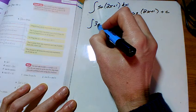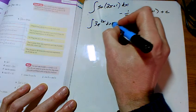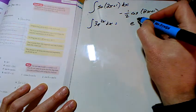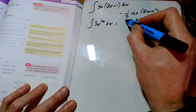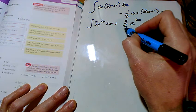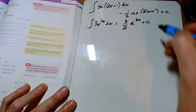For B, we've got 3e to the 2x, and so the e stays the same, the 2x stays the same, and we're going to divide by 2 as well. There was already a 3 there, let's divide by the 2, so I've got 3 over 2 e to the 2x.